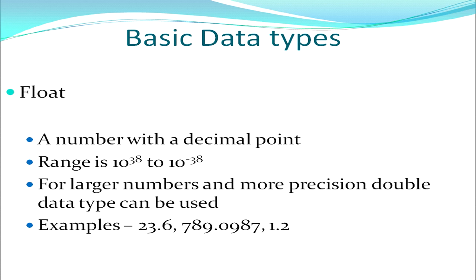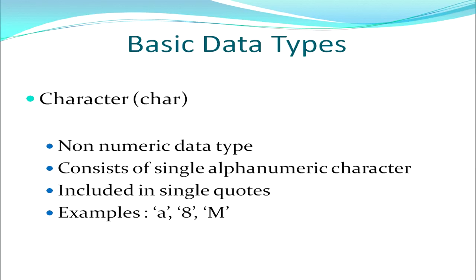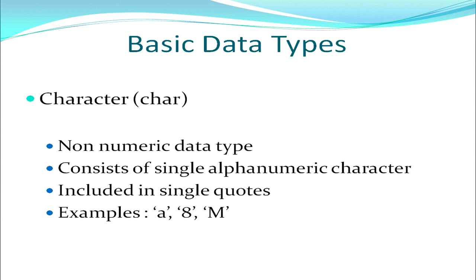Next we move on to float data type. If I want to store decimal numbers, I have to use a float data type. The range of float is 10 raised to power 38 to 10 raised to power minus 38. As you have seen with ints, floats can also store both negative and positive numbers. If I want to use a larger decimal number with more precision, then we use a double data type. The examples of floats are shown on the screen.